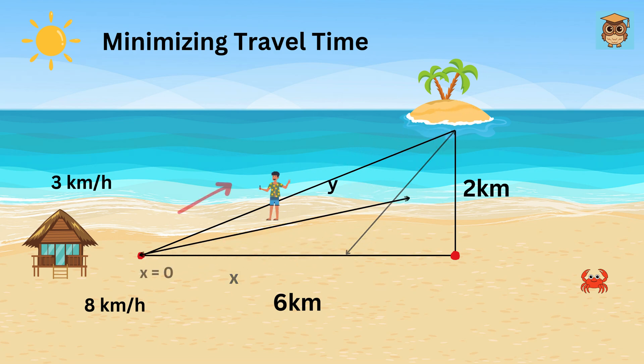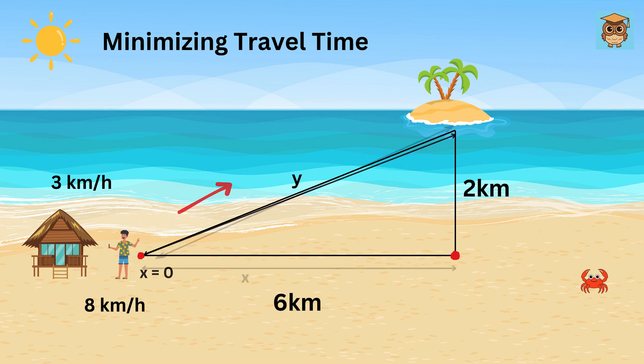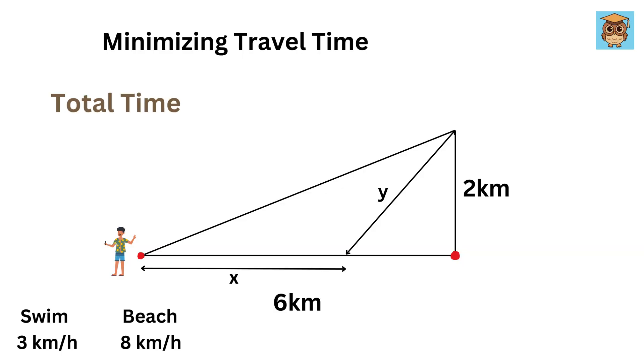If X is 0, then it indicates this path. And if Y is 2 kilometers and X is 6 kilometers, then it is this path. Also, let T be the total time it takes to get from the cabin to the island. Now, our job is to minimize this T. But how to do that?